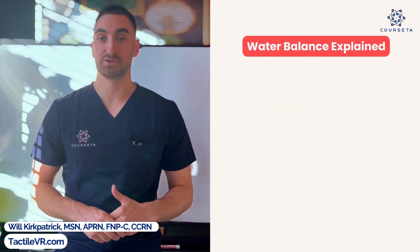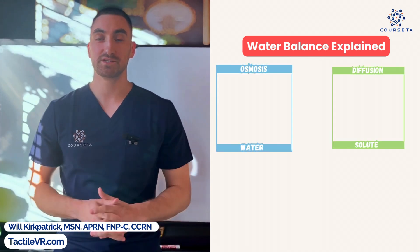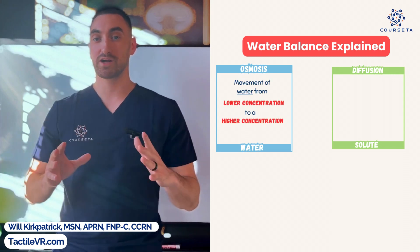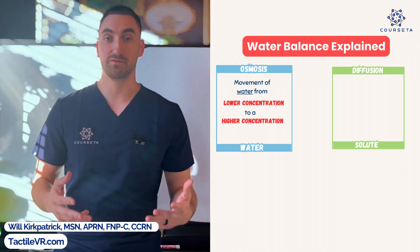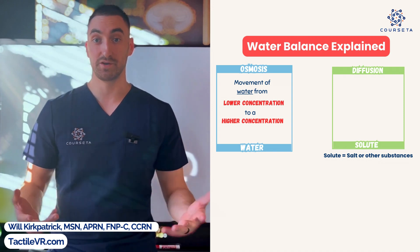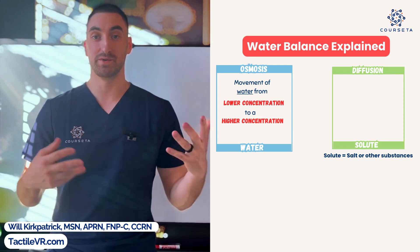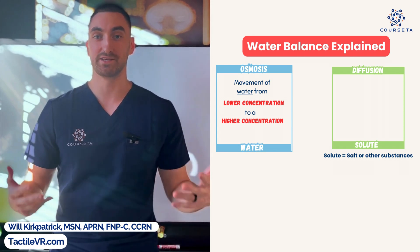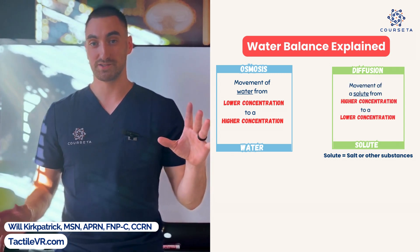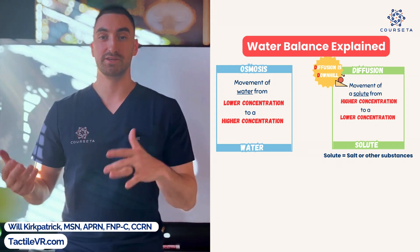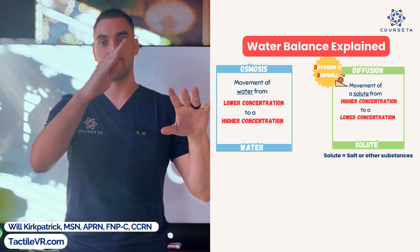To understand what these IV fluids do to our cells, we need to know osmosis and diffusion — but mostly osmosis. Osmosis is the movement of water from a lower concentration to a higher concentration. Diffusion is when the solute itself is moving — think of solutes like electrolytes, and sodium is the biggest one with these IV fluids. Diffusion is the movement of a solute from a higher concentration to a lower concentration. Think downhill — downhill starts with a D and so does diffusion.